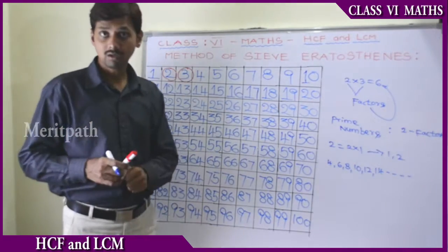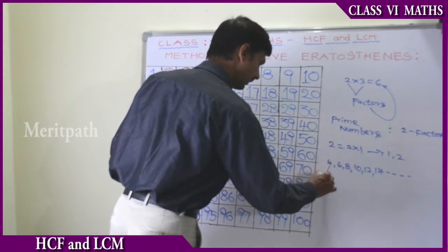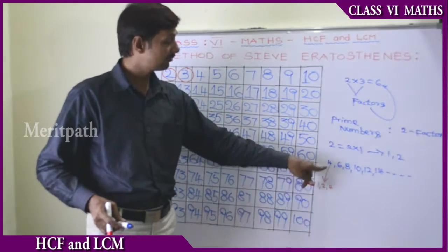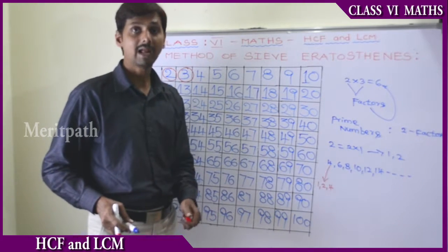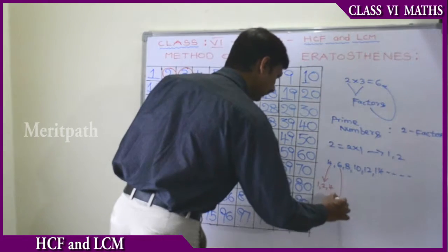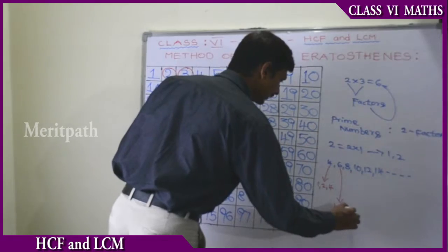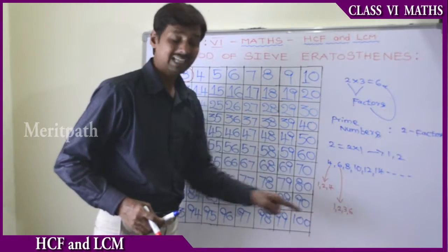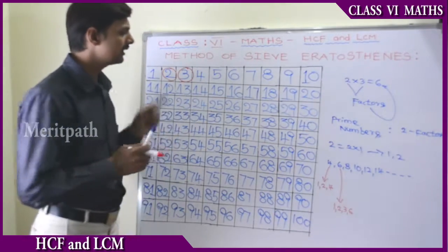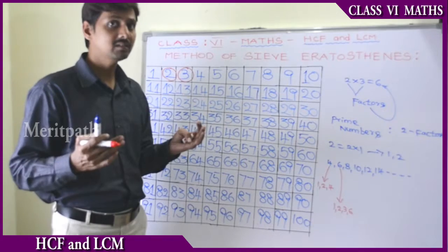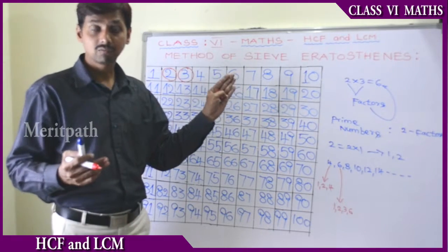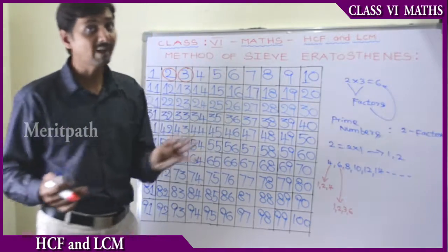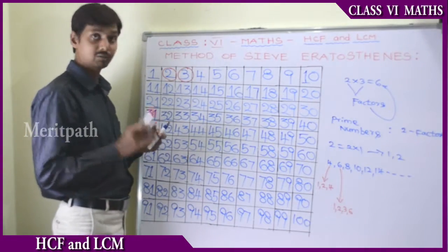Because if you take 4, the factors for 4 are 1, 2, and 4 — so 3 factors we have for 4. That's the reason these are composite numbers, not prime numbers. If we take 6, the factors are 1, 2, 3, and 6. So it has more than 2 factors. That's the reason it is not a prime number. So all the multiples of 2 will be having more than 2 factors, so those are not prime numbers.